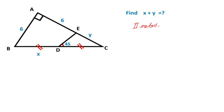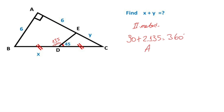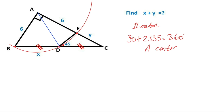Now we will calculate x plus y using a second method. First, this angle is 135 degrees and here is 90 degrees. Notice that 90 plus 2 times 135 equals 360 degrees. That means if we draw a circle, it passes through points B, D, and E. Then if we connect points A and D, notice that these two parts are equal.